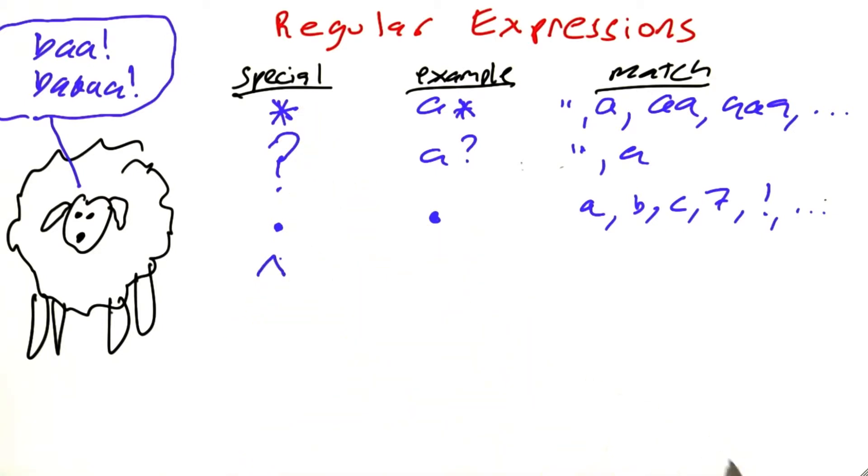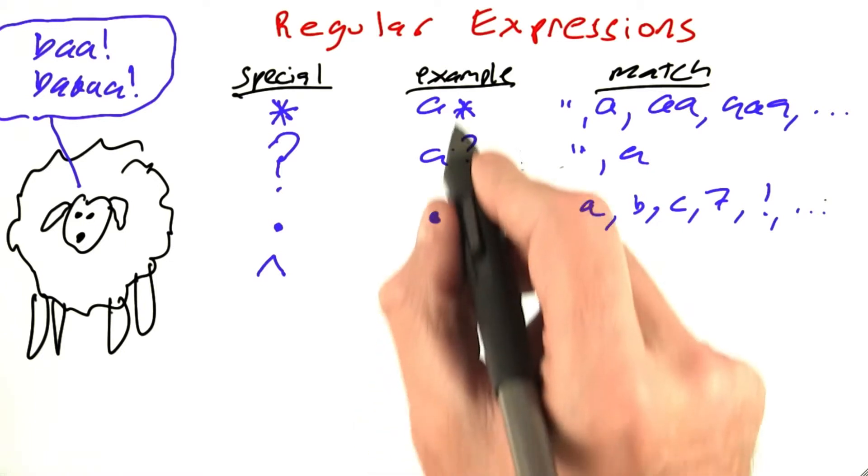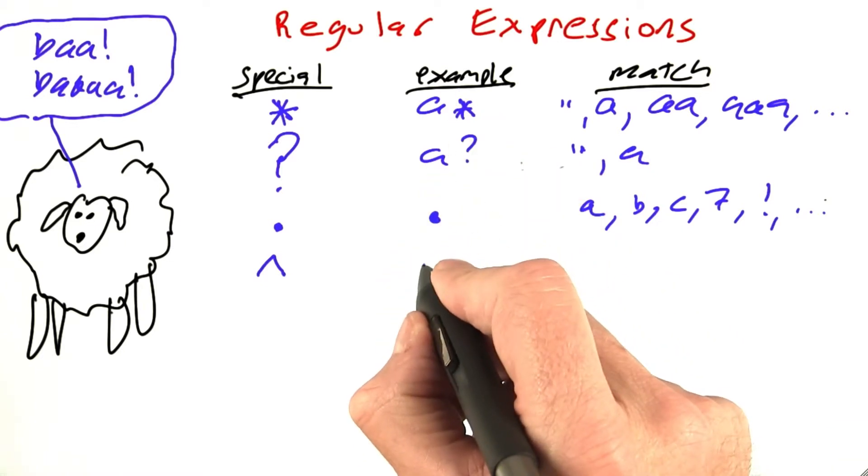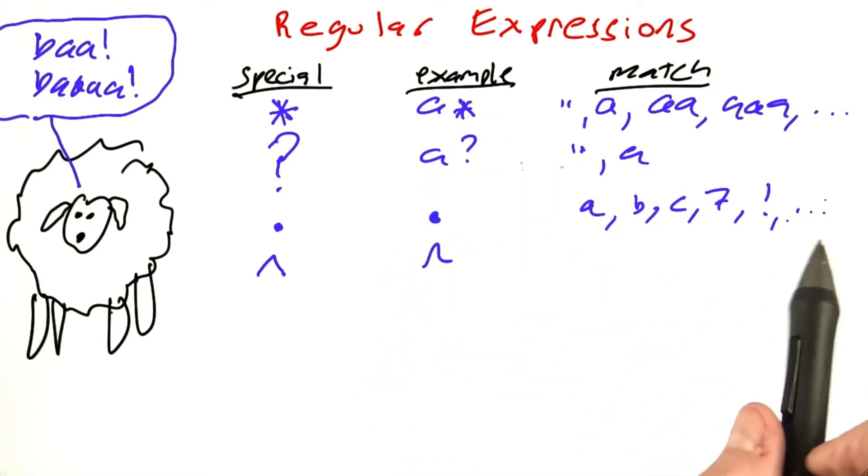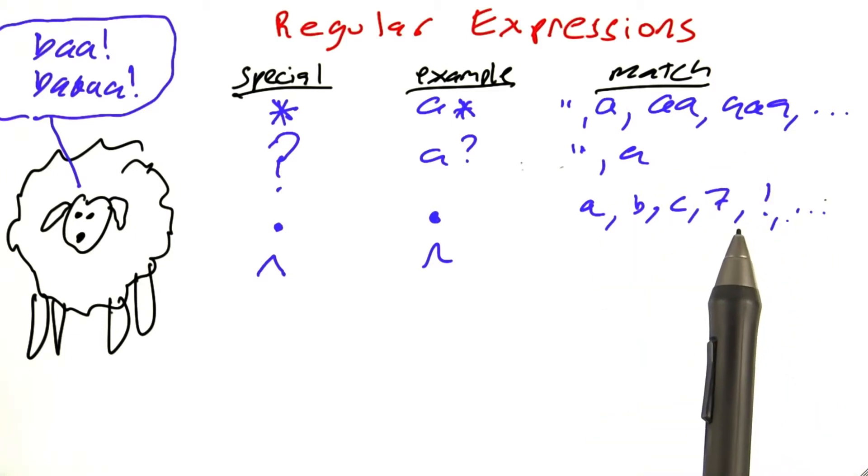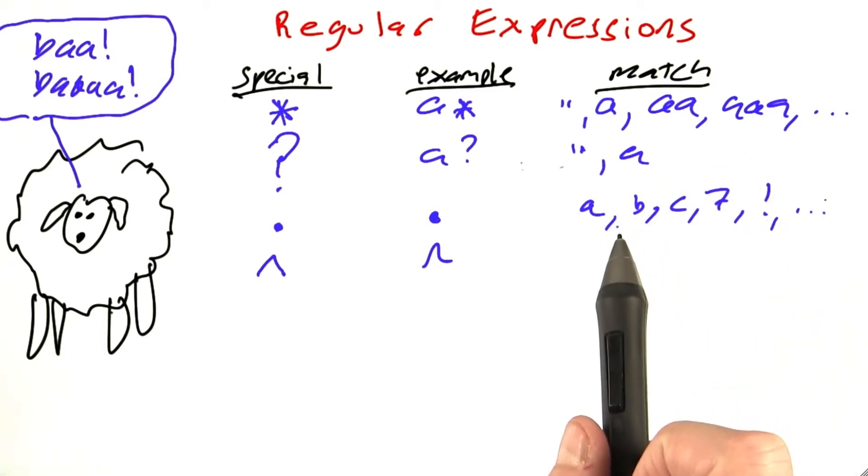then the up arrow, again, is a character that's by itself, not a two-character sequence. So the up arrow by itself matches only right at the beginning of the line, or that is, the beginning of the text that we're matching against.